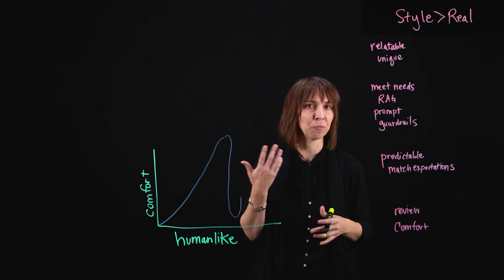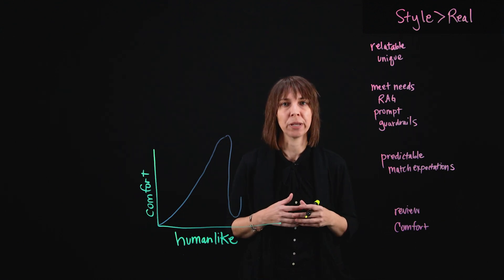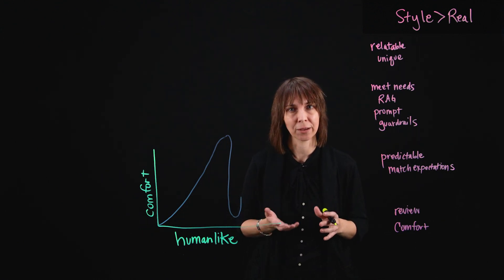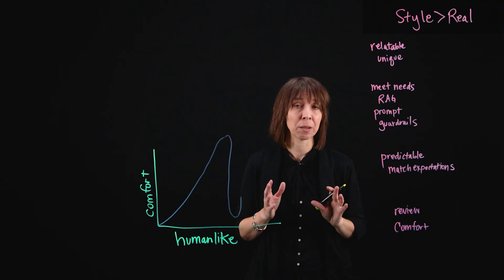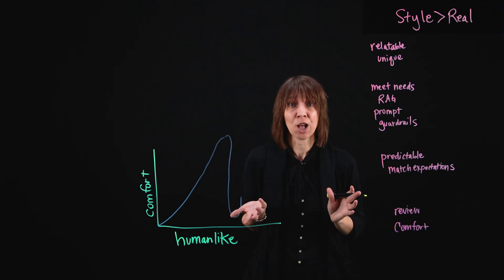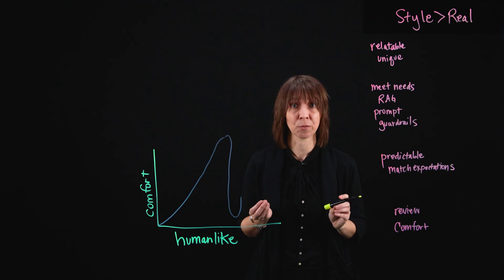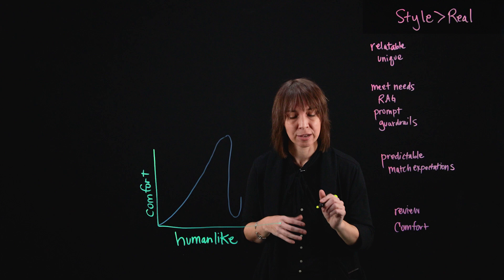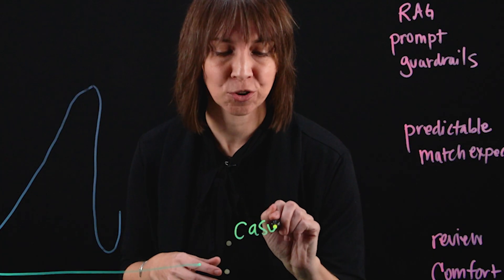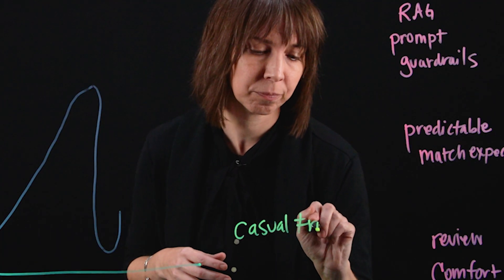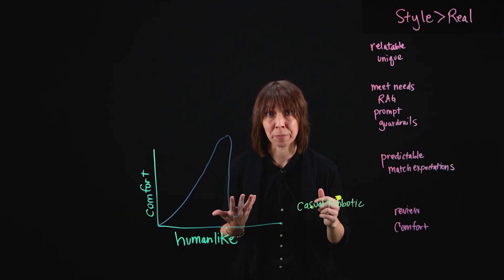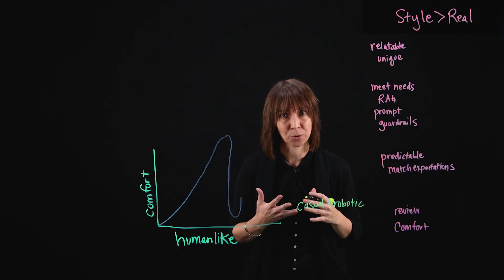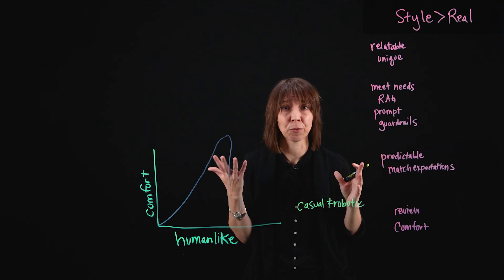An example scenario you might have experienced would be a user querying something like, 'Can you recommend a good restaurant near me?' A bad response might be something like, 'Sure, I can help you with that. In fact, here are some highly regarded institutions near you.' The reason this doesn't work is because the tone switches from casual to robotic — it starts off fluid, but then becomes stilted. Something better might be simpler, like, 'Here are some highly rated restaurants near you.'